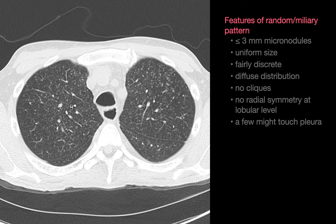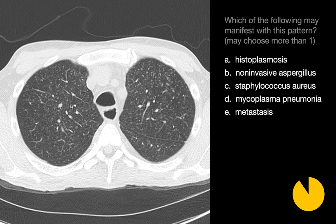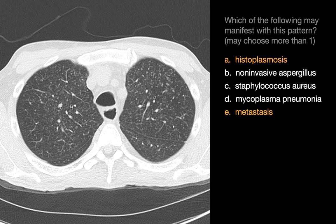With a random or miliary nodular interstitial pattern, we tend to think of disseminated hematogenously disseminated infections — usually TB, non-tubercular mycobacterial, and endemic fungal infections. We also think about hematogenously disseminated metastases; thyroid cancer is the classic example.